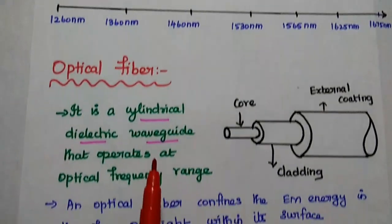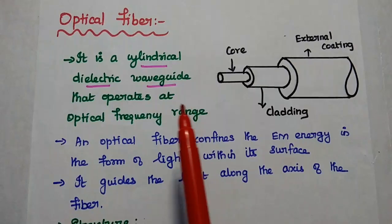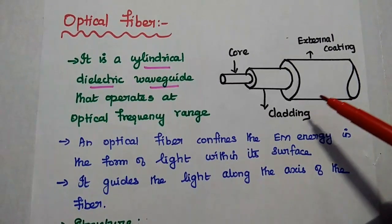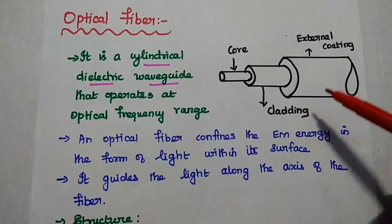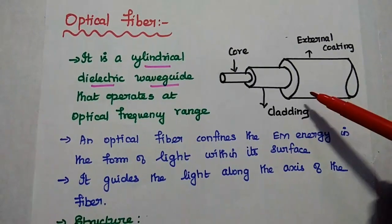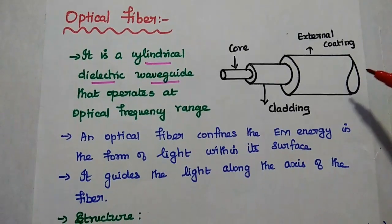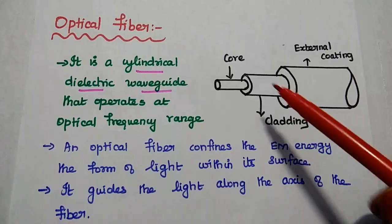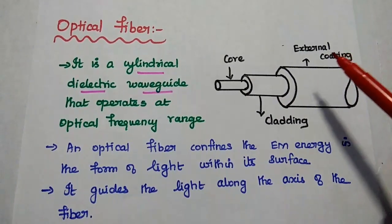Next one is optical fiber. It is a cylindrical dielectric waveguide that operates at optical frequency range. Waveguide means it confines the electromagnetic energy within its surface in the form of light and also guides the light along the axis of the fiber cable. This is the basic structure of optical fiber. It consists of three layers: core, cladding, and external coating or buffer coating.